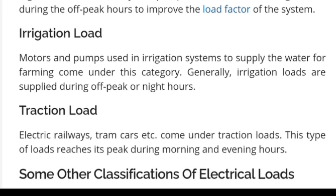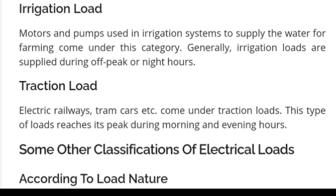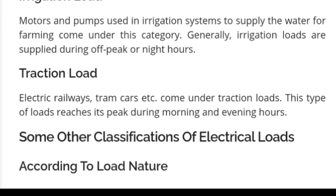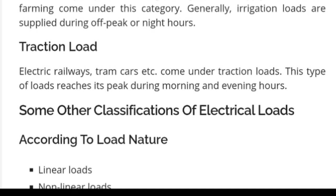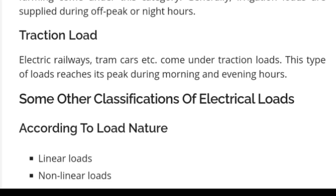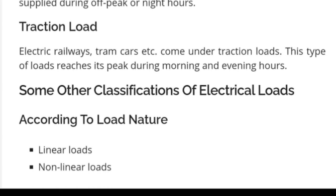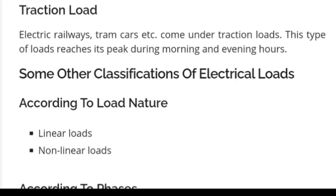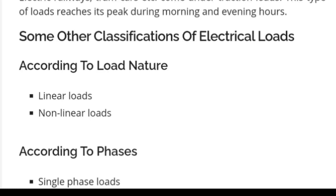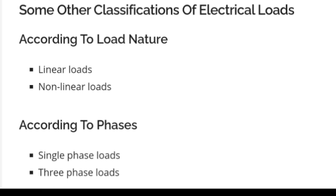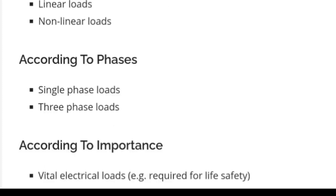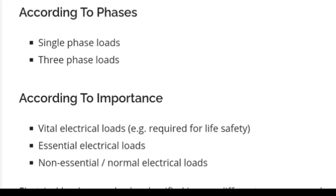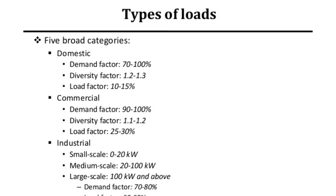Traction loads include electric railways, tram cars, etc., and reach peak demand during morning and evening hours. Other classifications of electric loads include: by nature — linear loads and nonlinear loads; by phases — single-phase and three-phase loads; and by importance — vital electrical loads (required for life safety), essential electrical loads, and non-essential normal electrical loads.